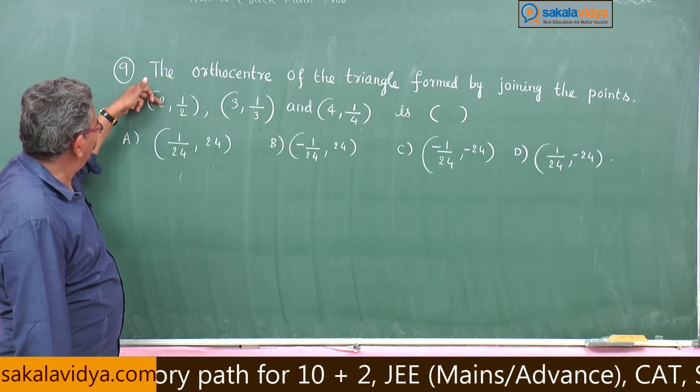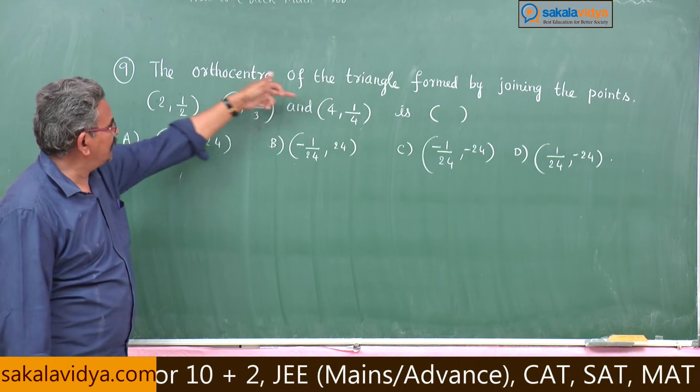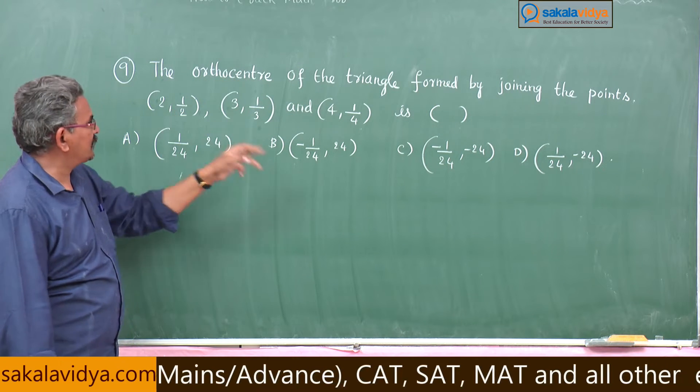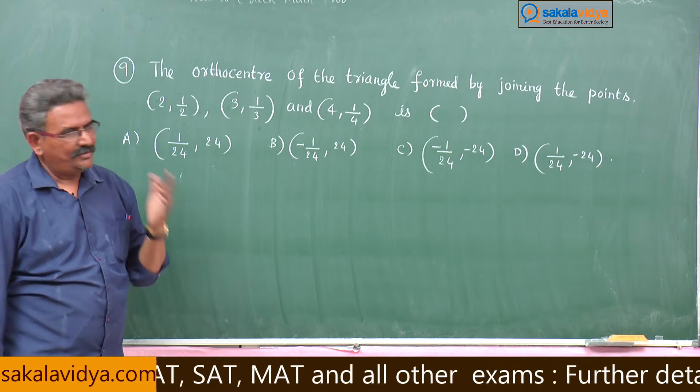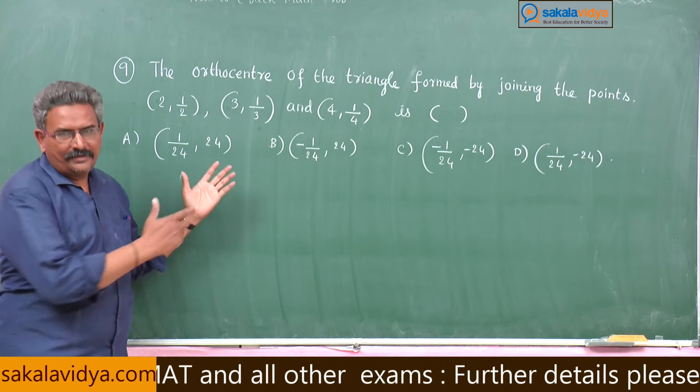That means 2 into 3, 6, 4: minus 1 by 24 and minus 24. So c option will be the right option there, but let us remember this as a formula.